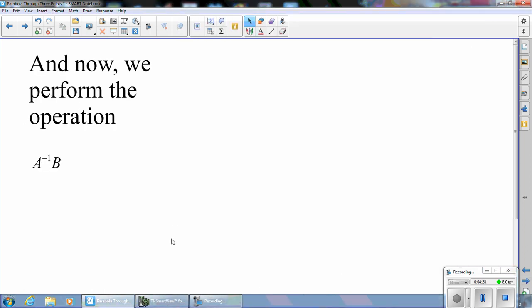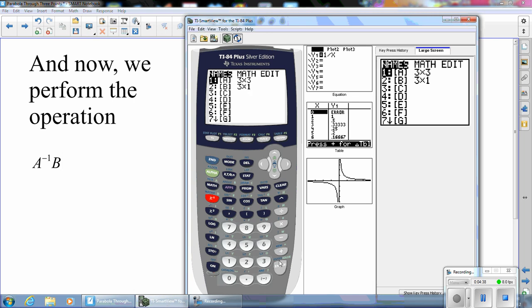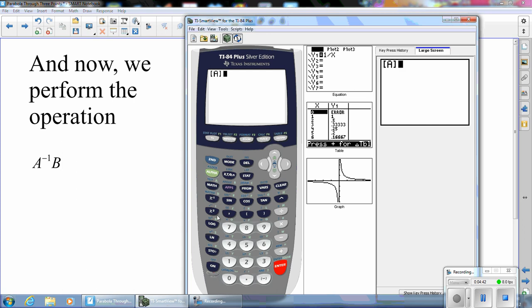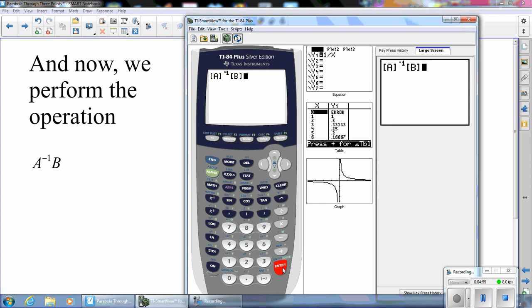So now that we've done that, we perform the operation A inverse B. So we go to a clear screen. And we call up the matrix menu. And we bring up the name matrix A by hitting enter. We add the inverse symbol right there. And then we go to matrix again. And bring up the name of matrix B. And then we hit enter.